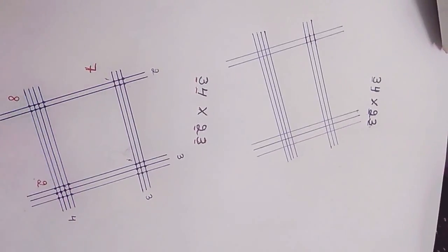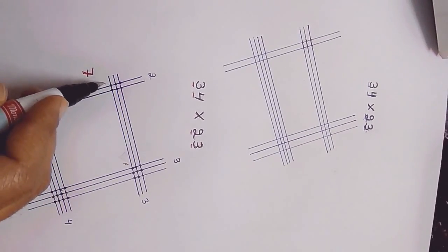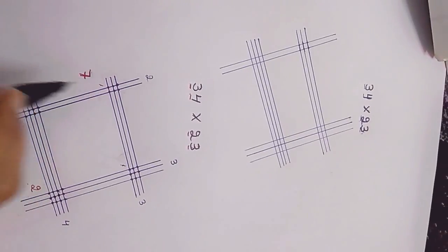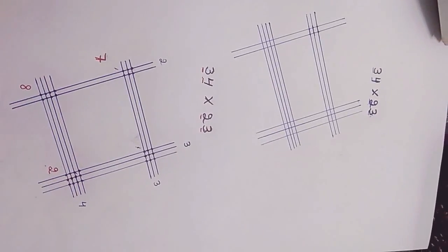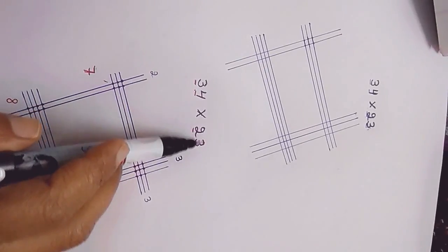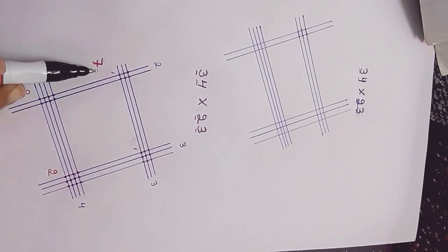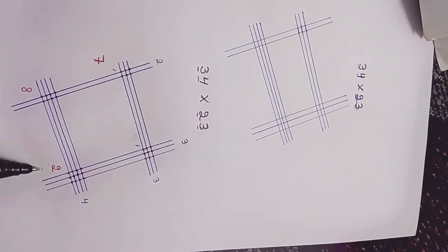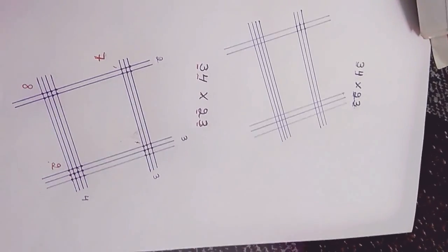So complete is 7. So the solution of 34 × 23 is 782. So here is a complete solution.